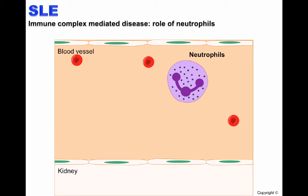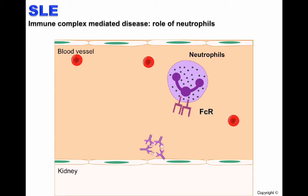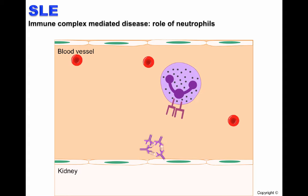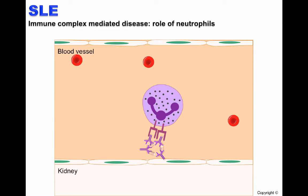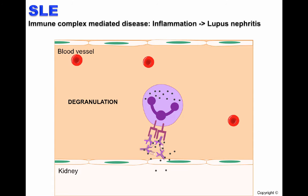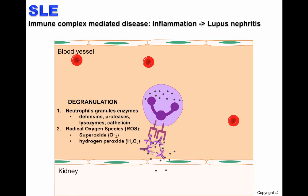Let's visualize how the neutrophil-mediated inflammatory process occurs. Once an immune complex gets deposited in the kidney, neutrophils which have FC receptors on their membrane can recognize the FC region of immunoglobulins found in the immune complex deposited in the cell membrane. Once the FC receptor on the neutrophils binds to the immune complex, the neutrophil degranulates and releases neutrophil granule enzymes, such as defensins and proteases. It also releases reactive oxygen species, such as superoxide and hydrogen peroxide, causing inflammation and tissue damage, or lupus nephritis.